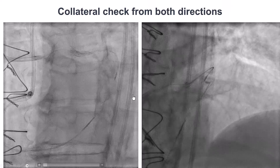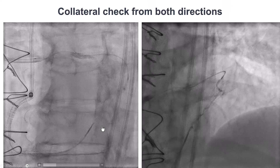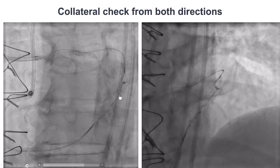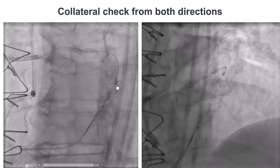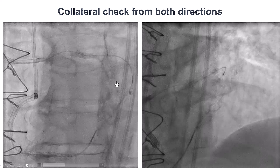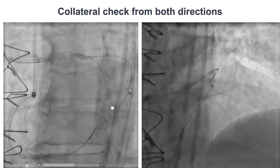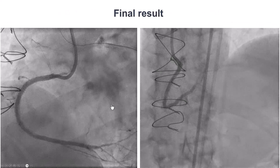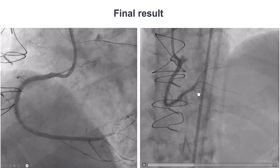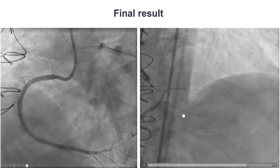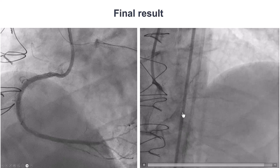We advanced another microcatheter both antegrade and retrograde to check the collateral, and performed injection from both microcatheters. This way, if we needed to coil the collateral, we had access from both sides. Fortunately, there was no such problem. This is the final result — TIMI 3 flow into the PDA as well as into the posterolateral.